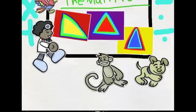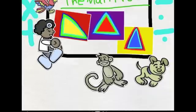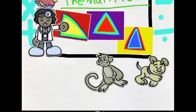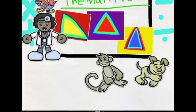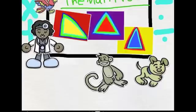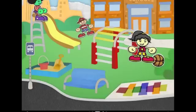Hi, welcome to Toontastic Math. I'm Sophie. These are the different types of triangles. This one is a right or scalene triangle — it has two names. It's called right because it has a right angle.